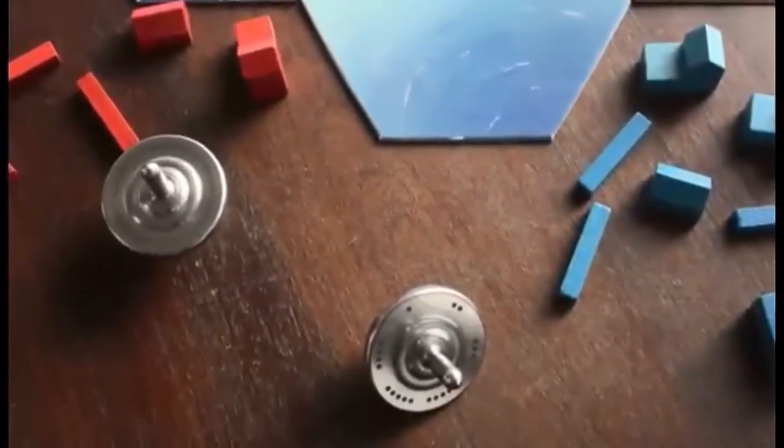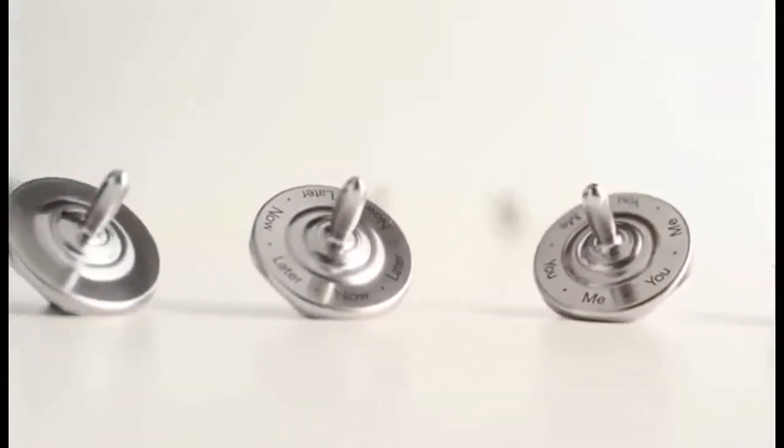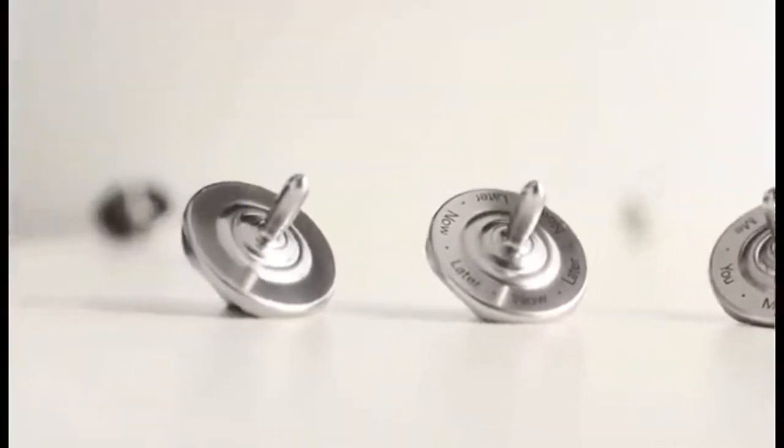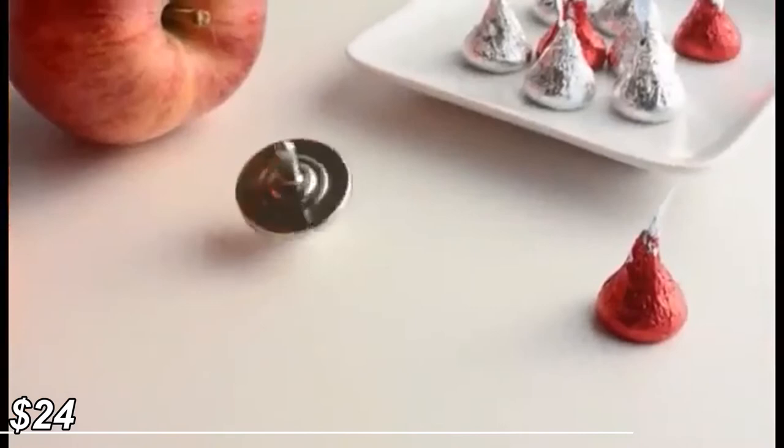Spin is made out of stainless steel. Due to its small size of 1.25 inches in diameter and 1.33 inches in height, it can be easily carried around, fitting the smallest of pockets. Spin sits at a price of 24 US dollars.